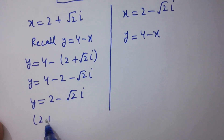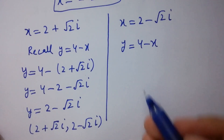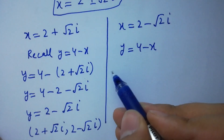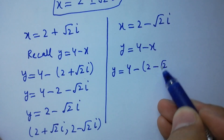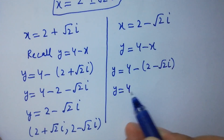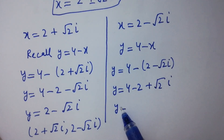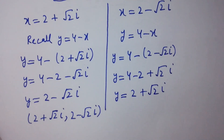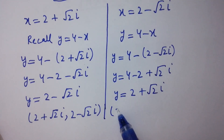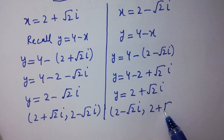For x equals 2 minus square root of 2i, we get y equals 4 minus (2 minus square root of 2i), which gives y equals 2 plus square root of 2i. So the two solution pairs are: x equals 2 plus square root of 2i with y equals 2 minus square root of 2i, and vice versa.